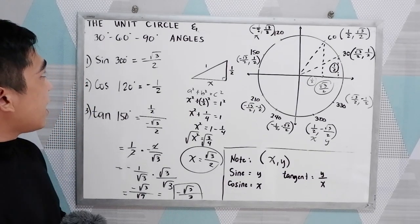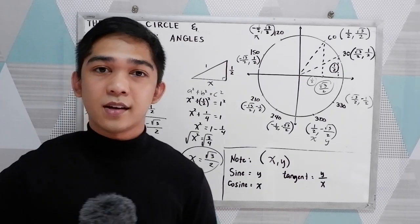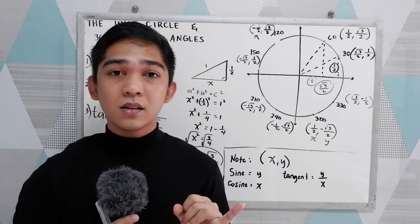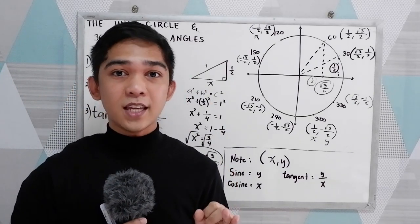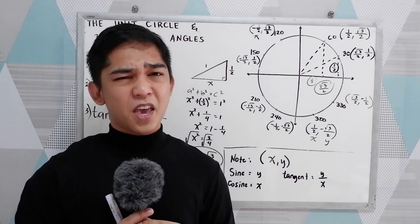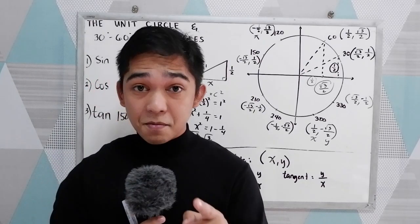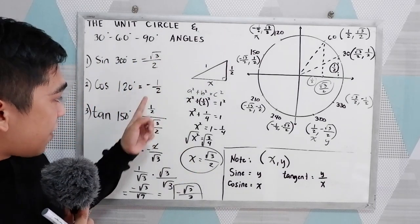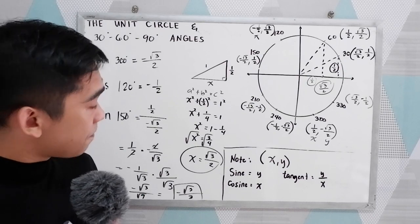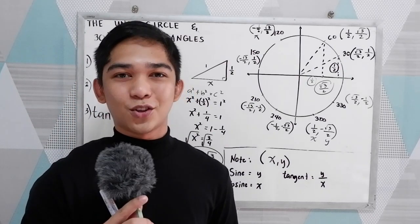So we are done with the unit circle and the 30, 60, 90 degree angles. This is part 3, covering the quadrantal angles, 45-45-90, and the 30-60-90 degree angles. Thank you for watching Senior Pablo TV. For your assignment, you need to verify whether the following answers are the same if you insert them in your calculator.